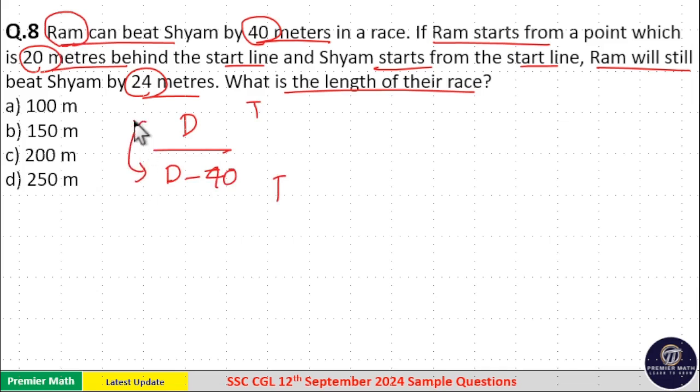So the difference is equal to 40 meters at the same time. Now, here when Ram covers d distance, Shyam is 40 meters behind him.